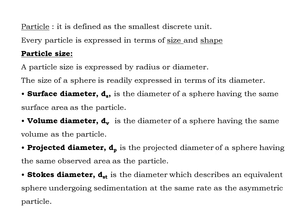A particle is defined as the smallest discrete unit, expressed in terms of its size and shape. Particle size is expressed in terms of radius and diameter. Surface diameter is the diameter of a sphere having the same surface area as the particle, and volume diameter is the diameter of a sphere having the same volume as the particle.